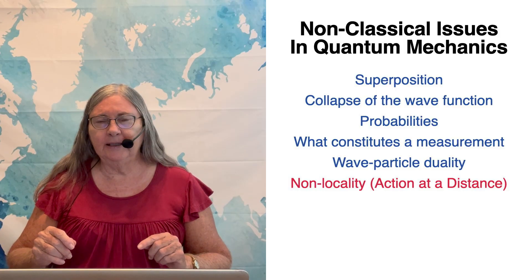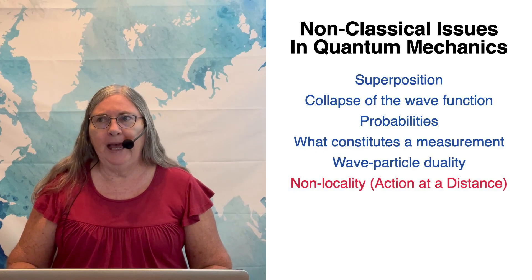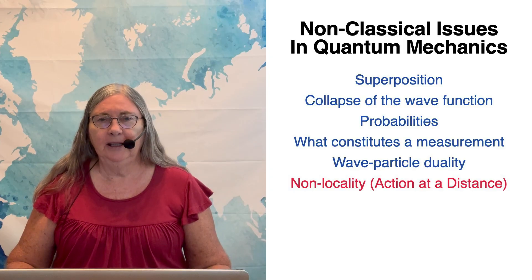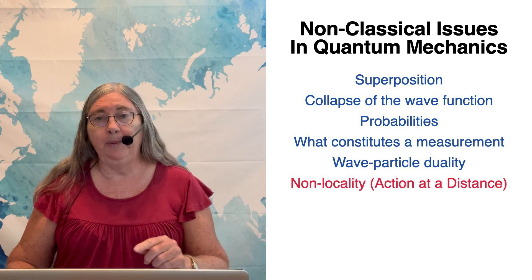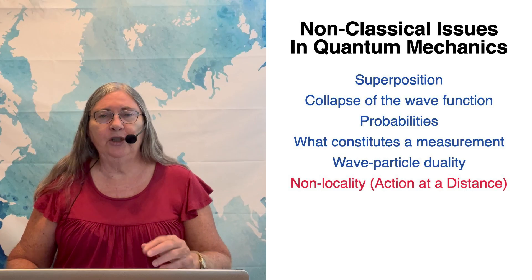People ask me what's the big deal about entangled particles. Aren't they just the same? Well, it turns out no, they're not just the same. Every quantum mechanical system has some properties that are surprising because they're different from classical mechanics. Here's a list of them, and the one that's most important for the entangled particles and Bell's theorem is the non-locality, which is also called action at a distance. Einstein called it spooky action at a distance.